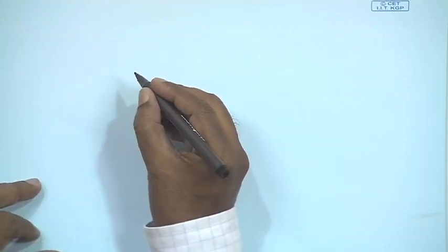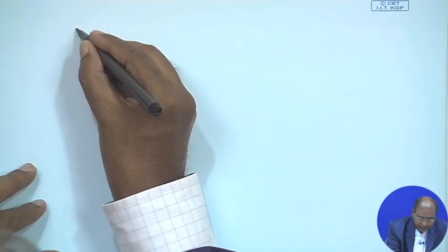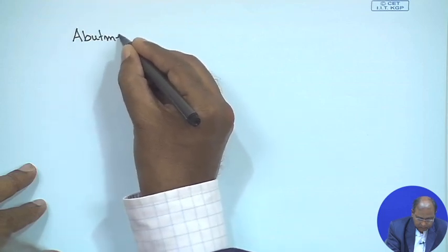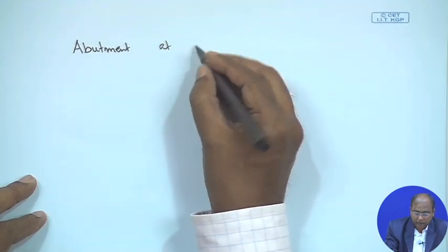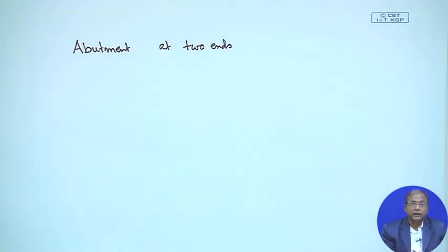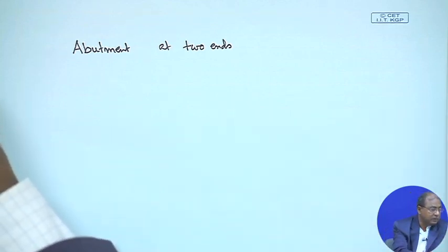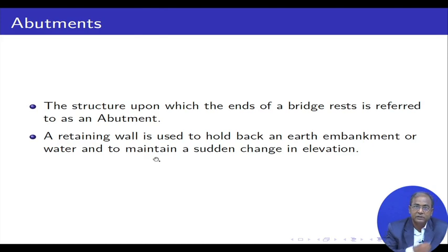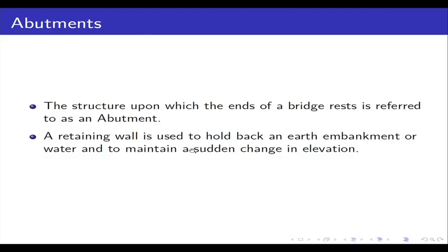Coming to this, we can consider the bridge abutment at two ends. What is an abutment? The abutment is the structure upon which the ends of a bridge rest. A retaining wall is used to hold back an earth embankment or water to maintain a sudden change in elevation.